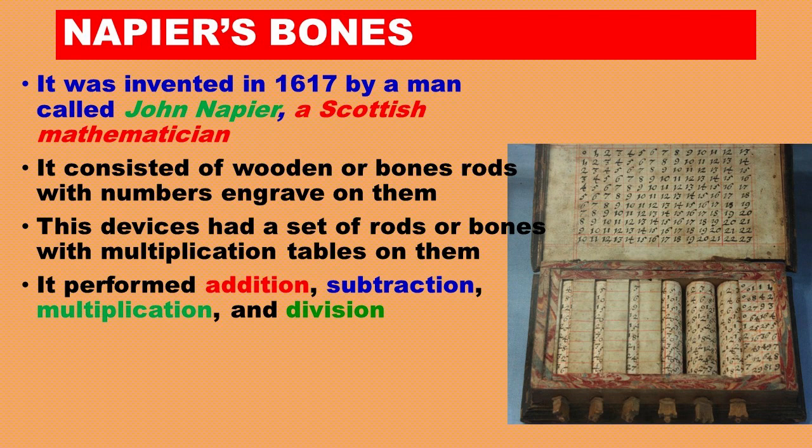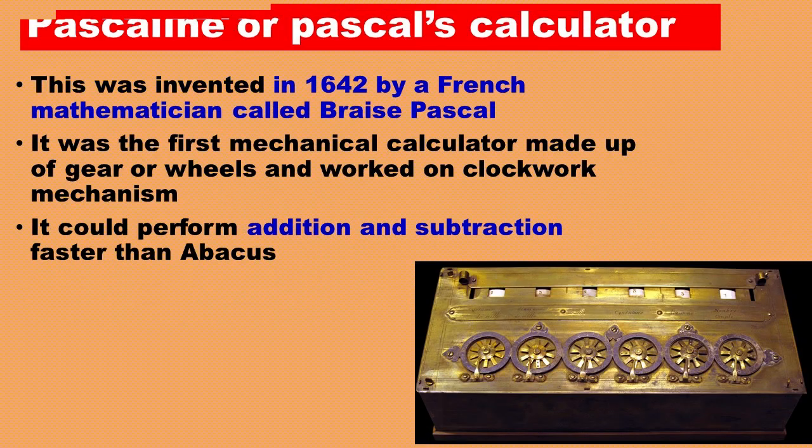Napier's Bones. It was invented in 1617 by a man called John Napier, a Scottish mathematician. It consisted of wooden or bone rods with numbers engraved on them. This device had a set of rods or bones with multiplication tables on them. It performed addition, subtraction, multiplication, and division.